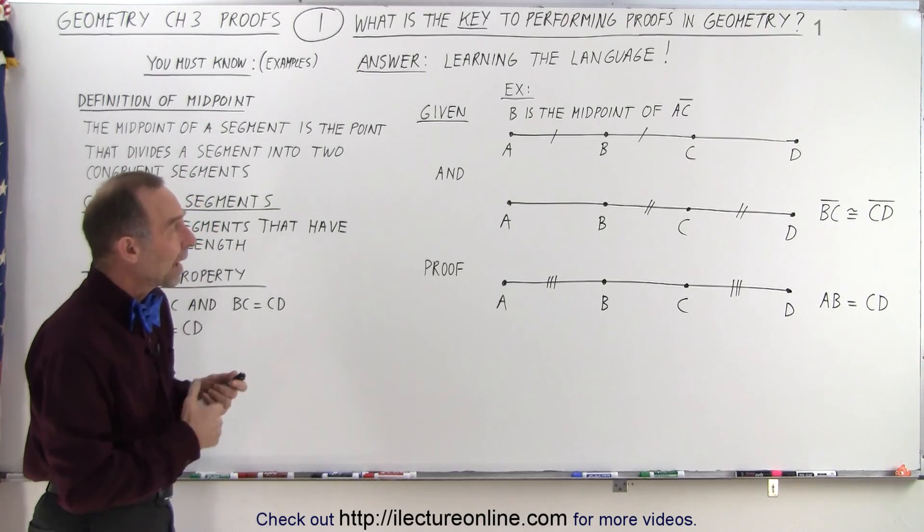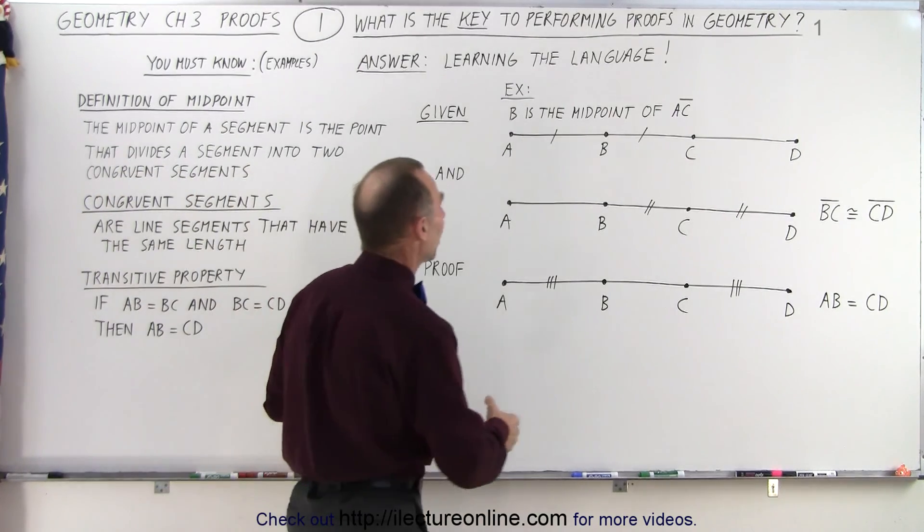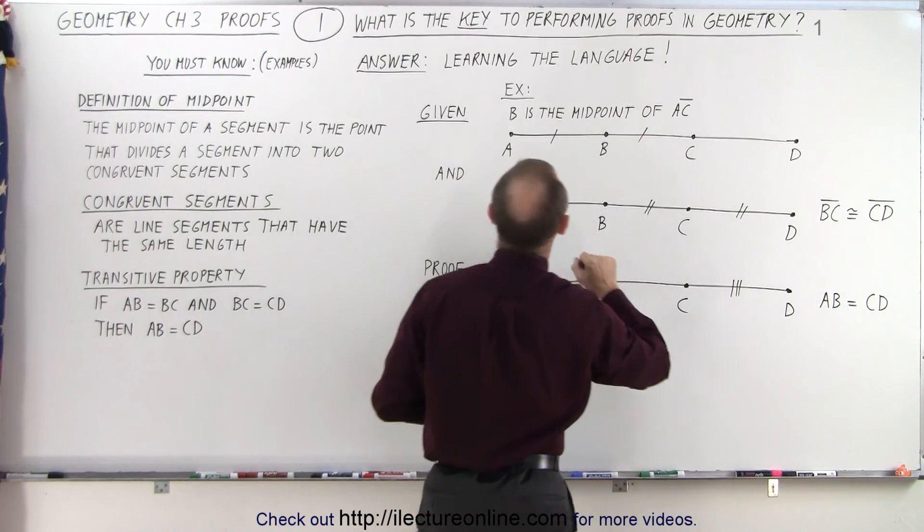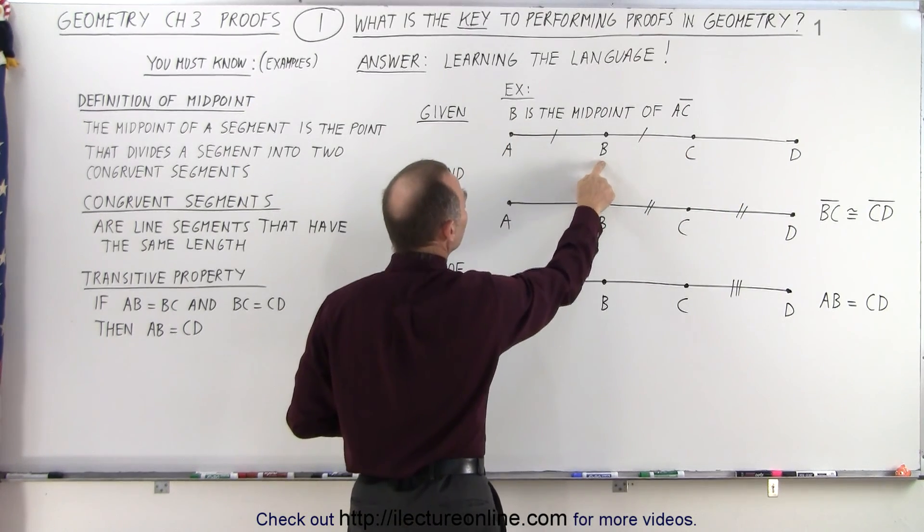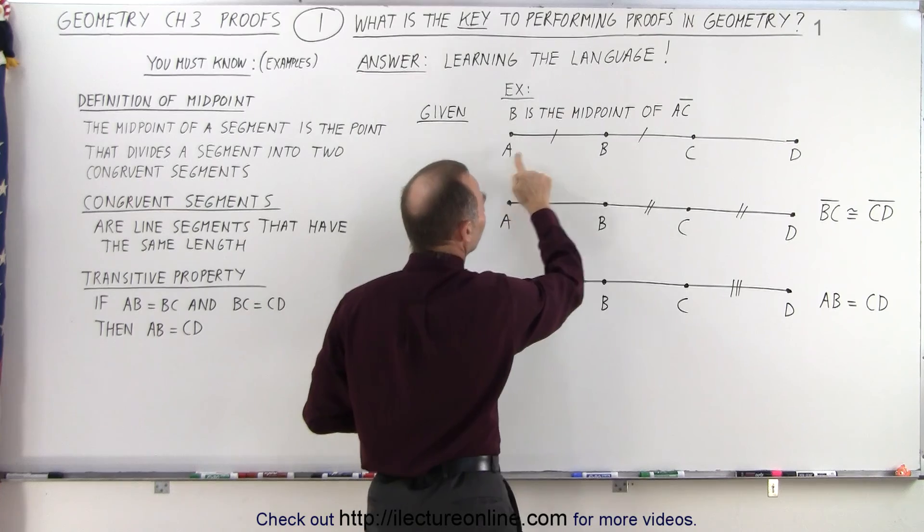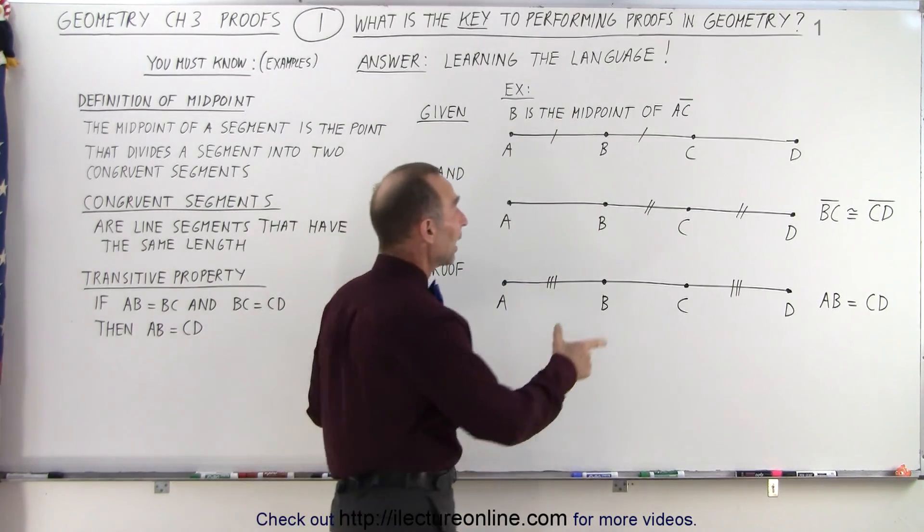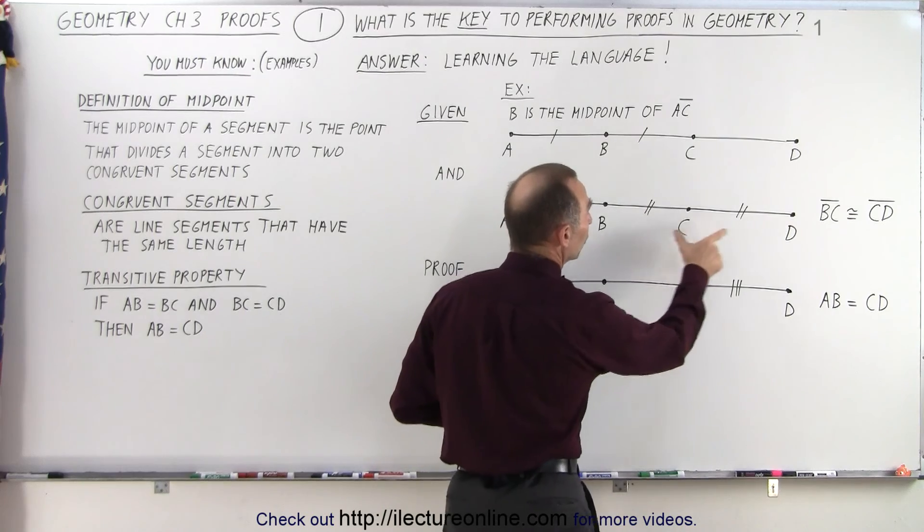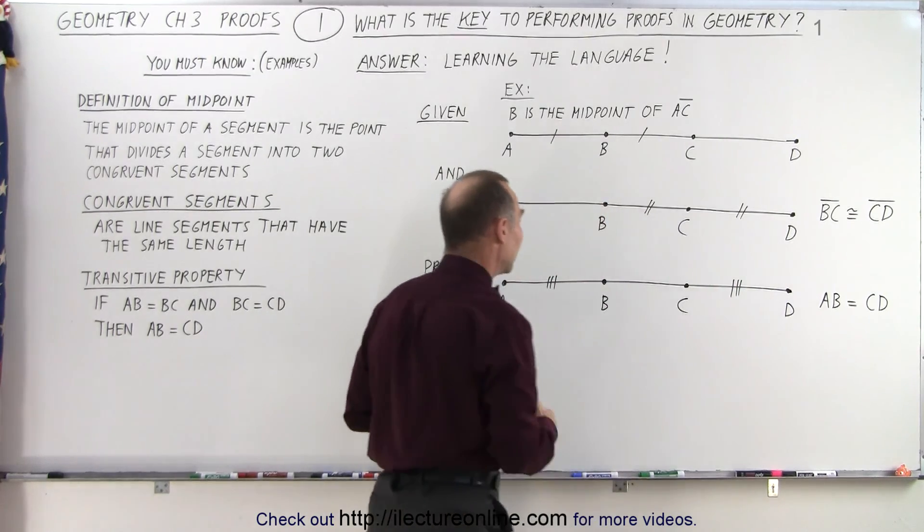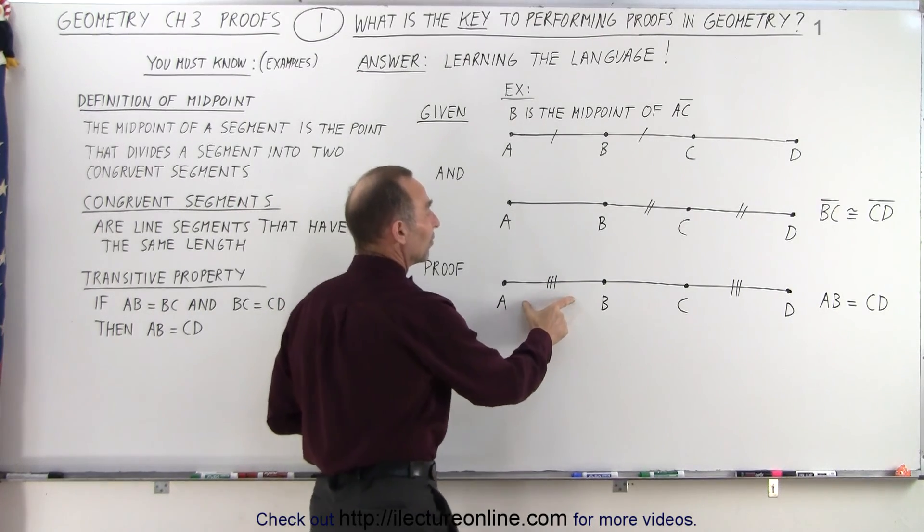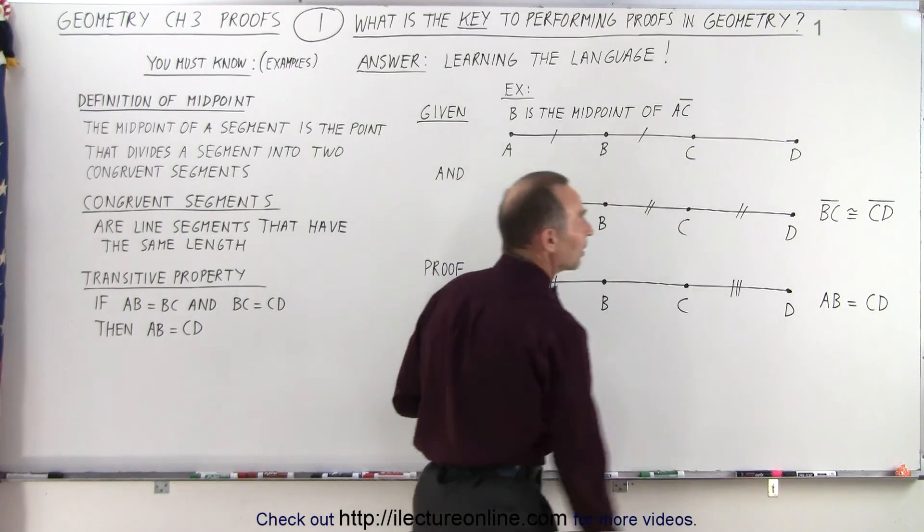For example, let's say we have the following given to us. We have three line segments, from A to B, B to C, C to D, and they tell us that B is the midpoint of the line segment AC. Then they tell us that line segment BC is congruent to line segment CD. And then finally they want us to prove that line segment AB is the same length as line segment CD.